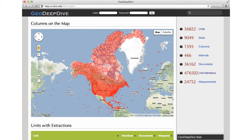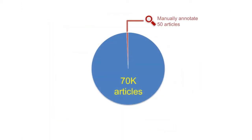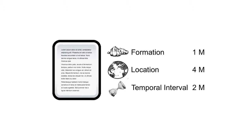Our preliminary analysis leads us to believe that there is even more dark data out there. We randomly sampled 50 papers from 70,000 geoscience articles and manually searched for dark data. Based on the analysis, we believe that there are more than 1 million mentions of formation units and 4 million mentions of locations buried in the text.